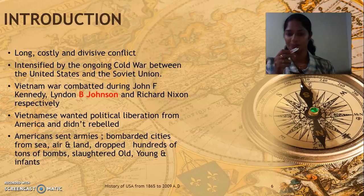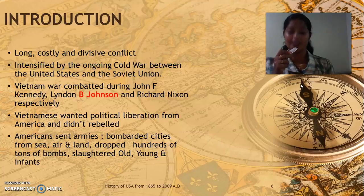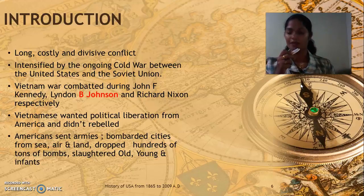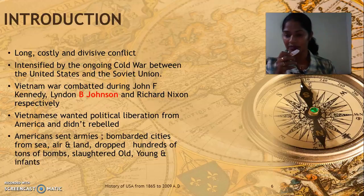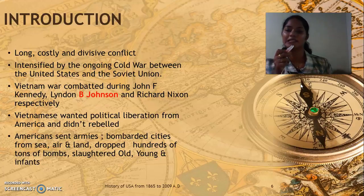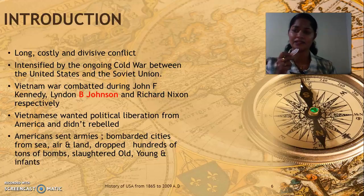The Vietnam War was combated during three presidents' periods: namely John F. Kennedy, Lyndon B. Johnson, and Richard Nixon respectively. The Vietnamese wanted political liberation from America, similar to how Indians wanted to come out of Great Britain's colonialism. But there was a difference — the Vietnamese did not raise their voice directly against America. However, when Americans sensed the desire for freedom among the Vietnamese, they sent their armies, bombarded important cities from sea, air and land, dropped hundreds of tons of bombs, and slaughtered old, young, and innocent infants mercilessly.